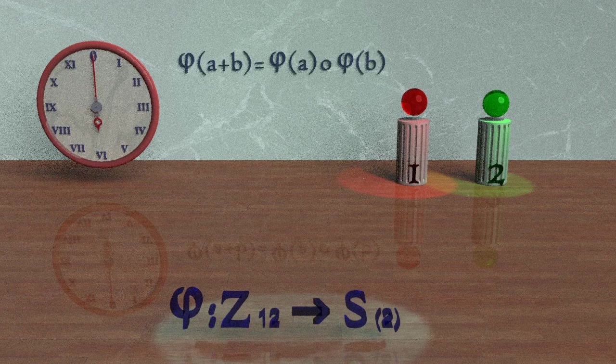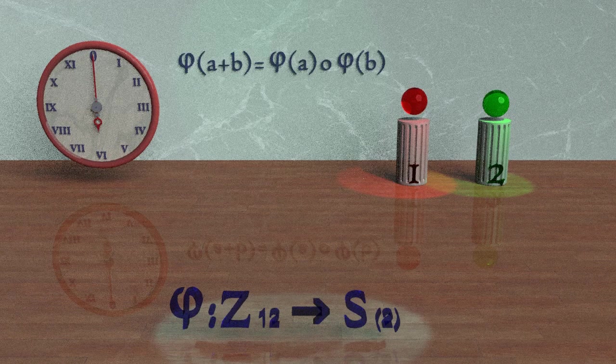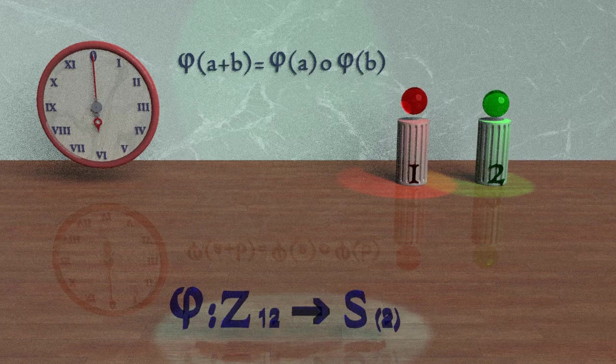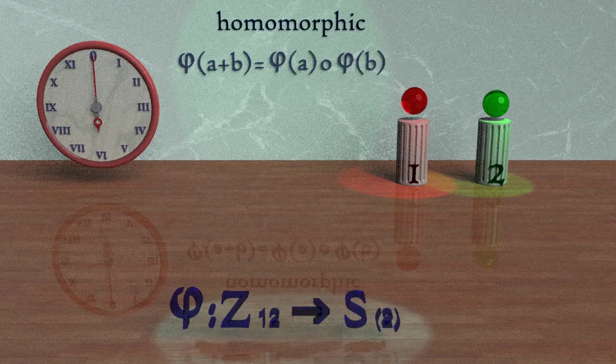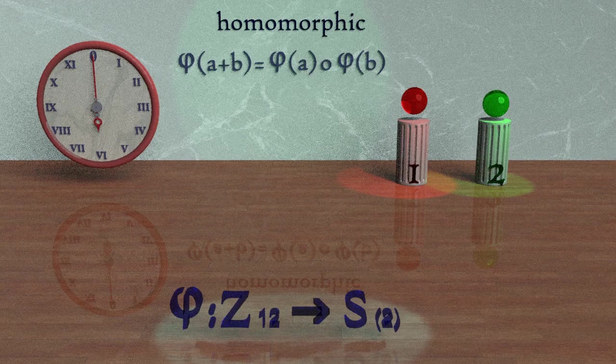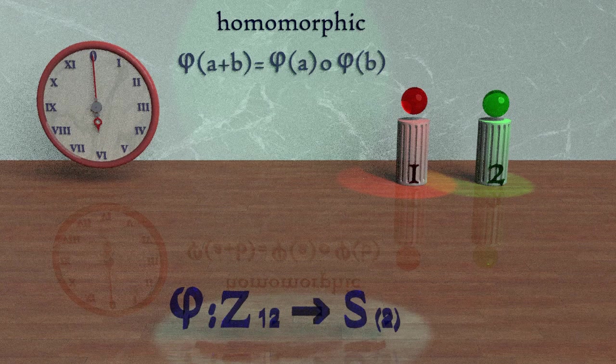We have this equation, and if this equation holds true for all the elements in the group, as it does here, we say that the group Z_12 is homomorphic to the group S_2, or that there is a homomorphism between the groups.